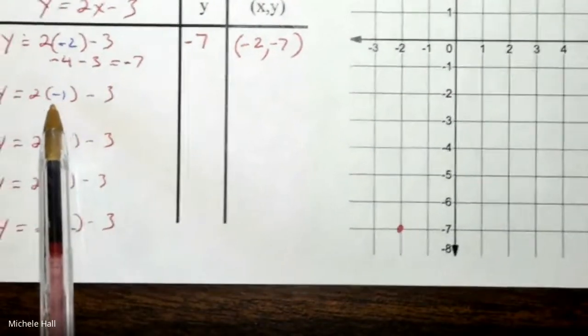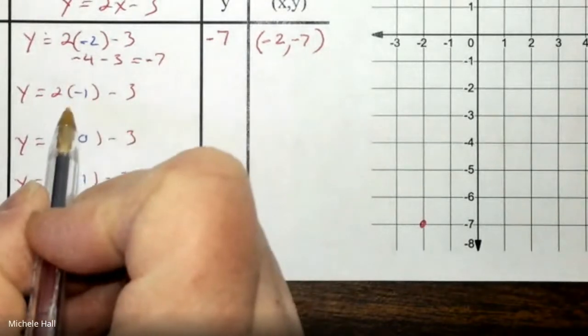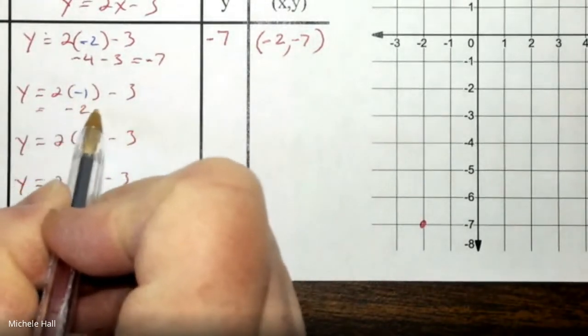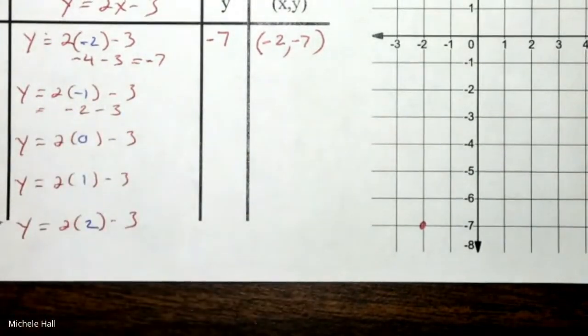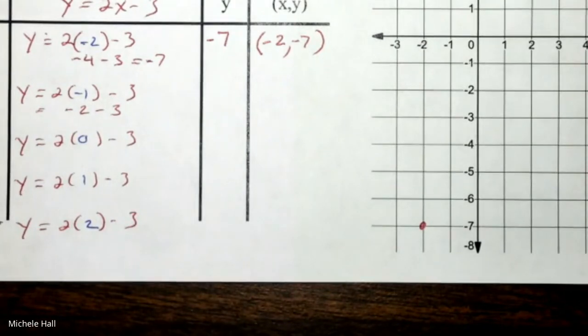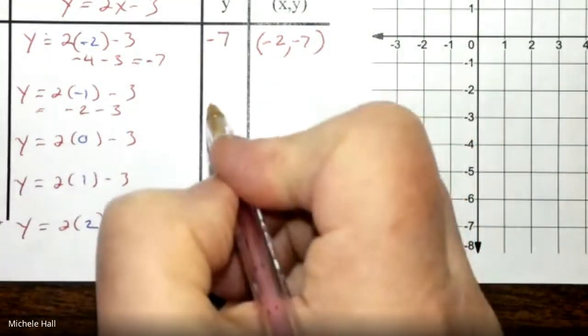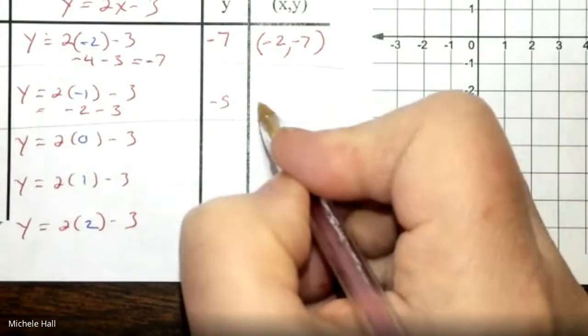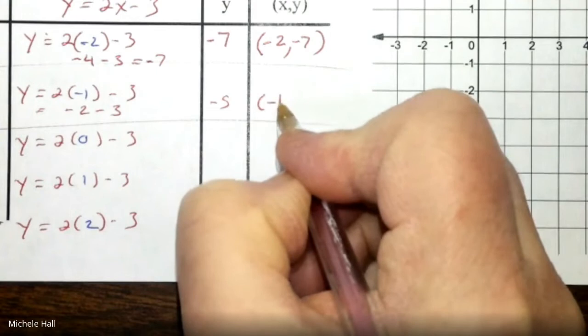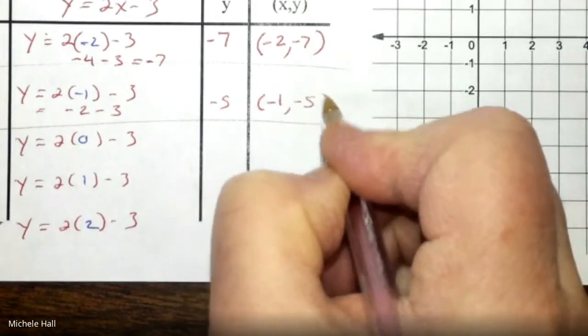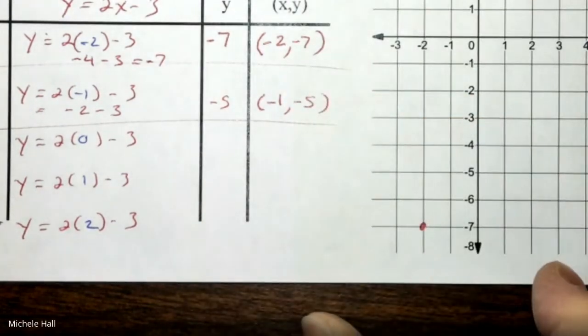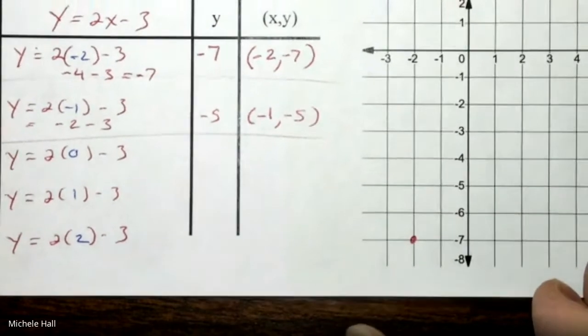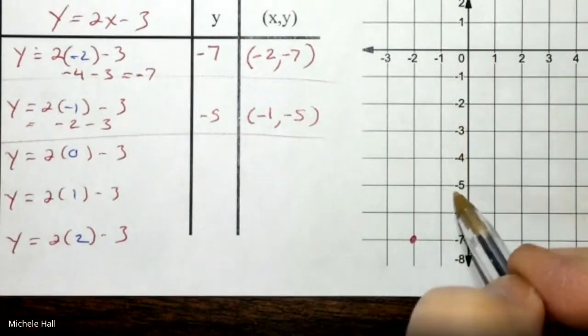2 times negative 1 is negative 2, negative 3. What's Y equal this time? Y equals negative 5. Write my ordered pair. When X was negative 1, we found that Y was negative 5. And then graph your ordered pair. Negative 1 for X, negative 5 for Y.